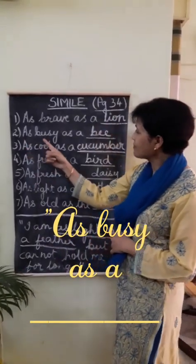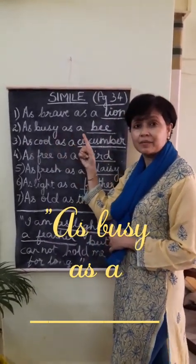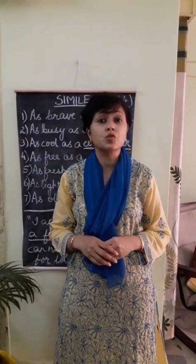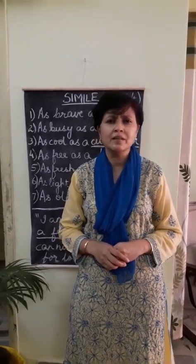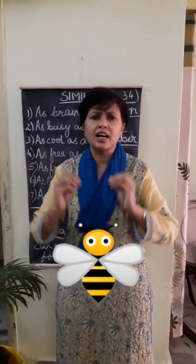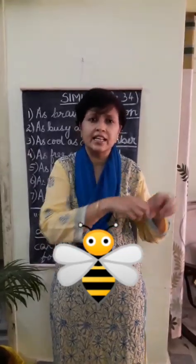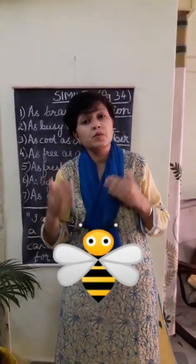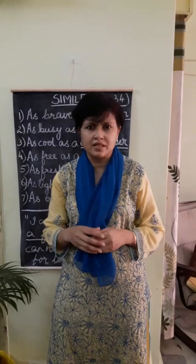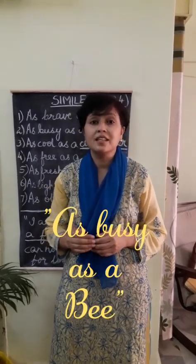Number 2: as busy as a bee. A honey bee keeps flying here and there. It has a hive — a beehive — where it stores and collects honey. The bee keeps flying in and out of the hive, flying over different flowers, collecting nectar, entering the hive, making honey, and coming out again — doing this every day, again and again. So that is why we say as busy as a bee.